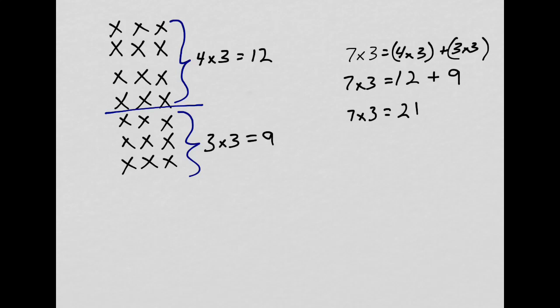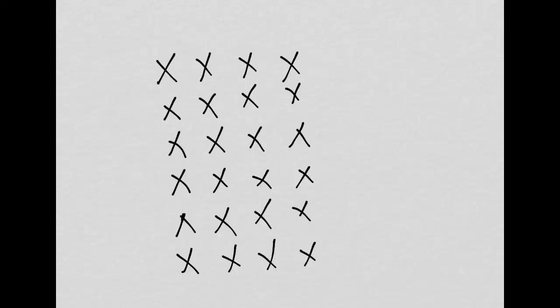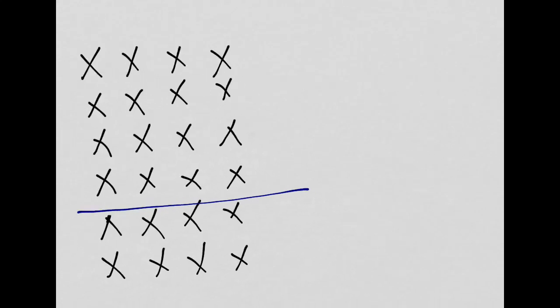Let's try one more and then we'll stop. Here we have a six by four array. It's six fours. I'm going to chunk it again. I'm going to chunk it here. So I have four groups of four and two groups of four.